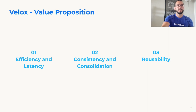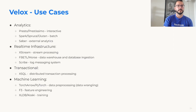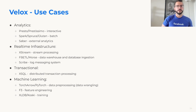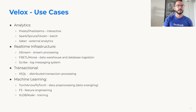Going over some of the Velox use cases: we're integrating Velox in a large number of different systems. From analytics, we're integrating Velox inside Presto via the Prestissimo project, which was open sourced recently. Velox is also being integrated in Spark — we have two integrations: one internal at Meta called Spruce, and one developed by Intel recently open sourced called Gluten. We're also integrating Velox in real-time infrastructure, stream processing systems, data warehouse and database ingestion systems, and even on the log messaging pipe itself. Transactional engines are also being developed using Velox, and we're integrating Velox in many systems in the machine learning ecosystem.